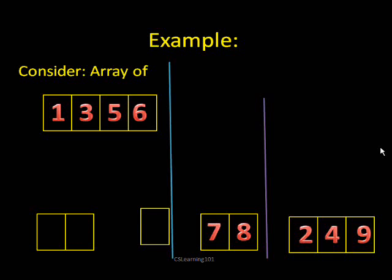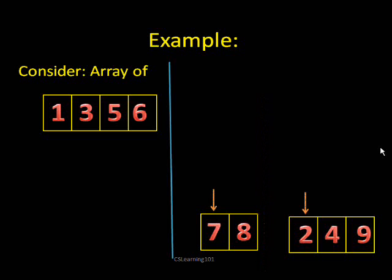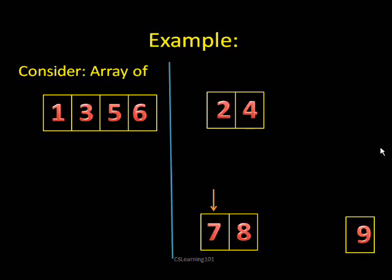Now we do the same for the next two lists. Comparing two and seven — two is less than seven, so two goes first. Then comparing seven and four — four is less than seven, so four goes next. Then seven and nine — seven is less than nine, so seven goes first. Then eight and nine — eight is less than nine, so eight goes first. And then nine is all that's left, so nine goes last.